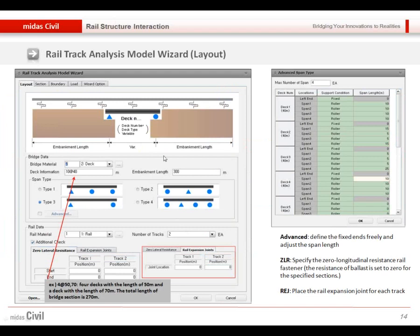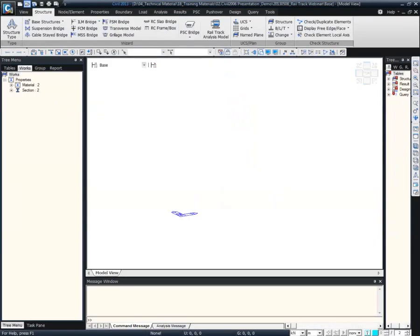So this is the rail track analysis model wizard. This is the additional module of MIDAS Civil, which is composed of these five tabs: layout, span, boundary, load, and wizard options. If we see those options one by one, so I will open the program and then I will show you.